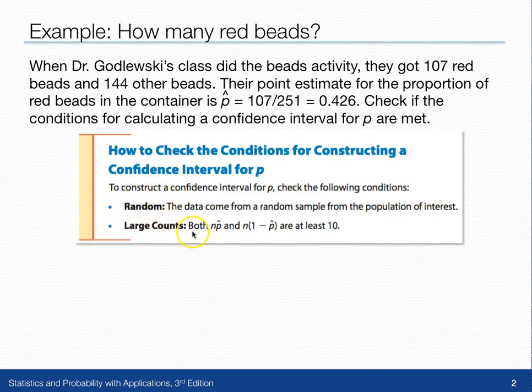Next, we want to make sure that both n times p-hat and n times 1 minus p-hat are at least 10. This is the large counts condition.